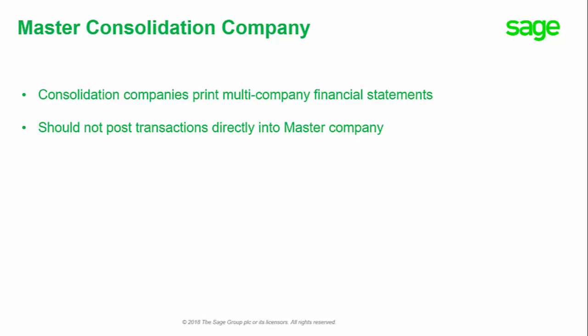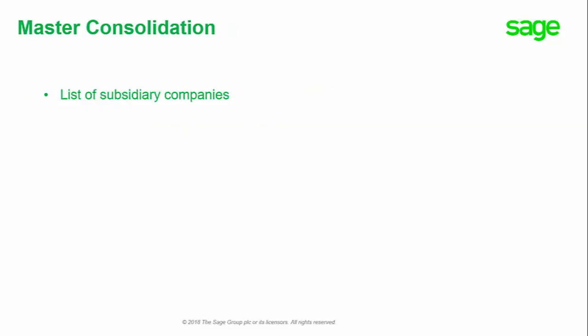You should not post transactions directly into a master consolidation company. You may already have your separate companies created in your Sage BusinessWorks. If not, you need to create each of your separate companies first. These companies will be your subsidiary companies.